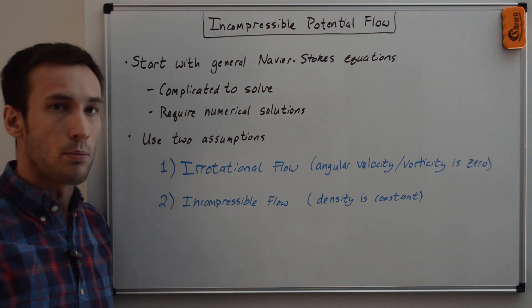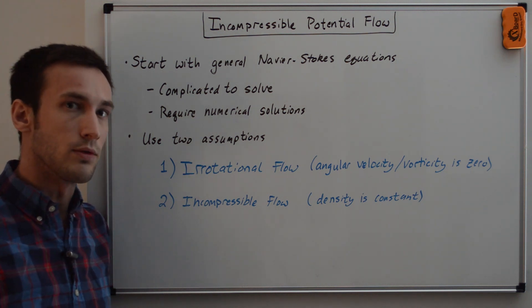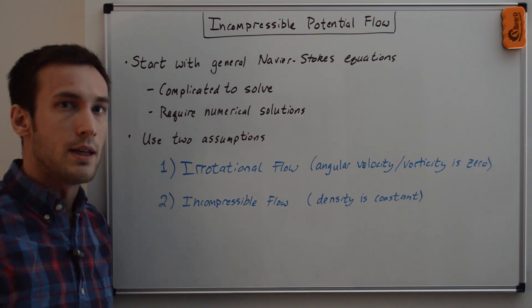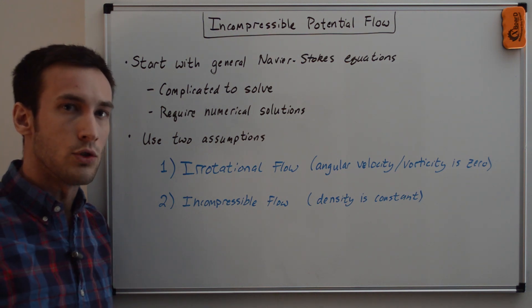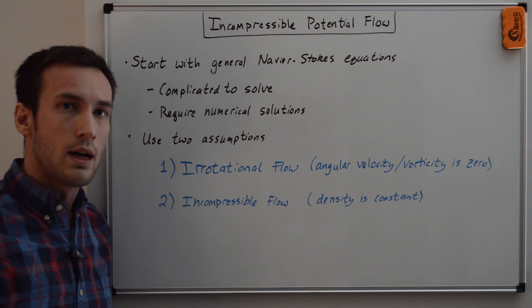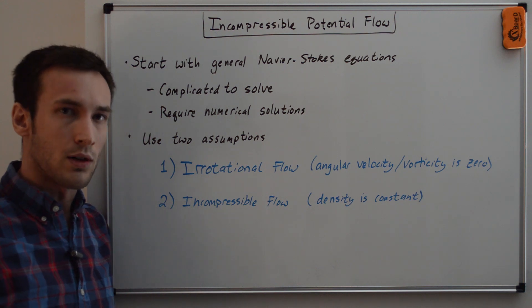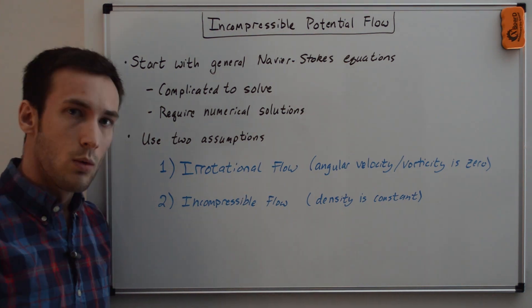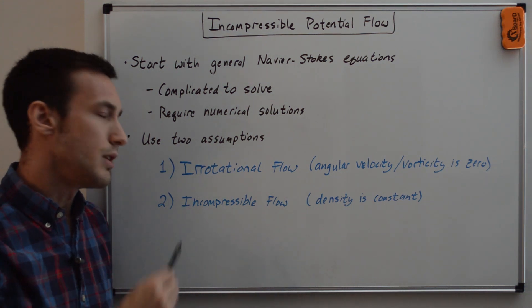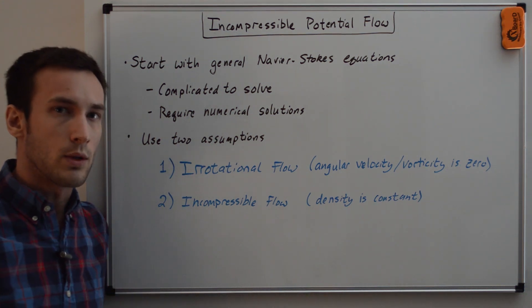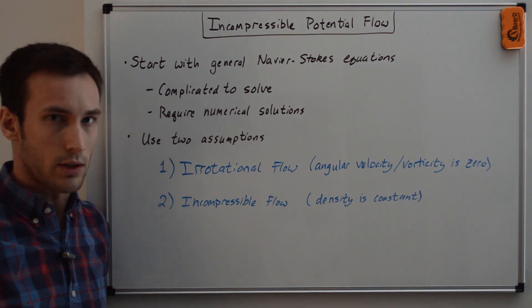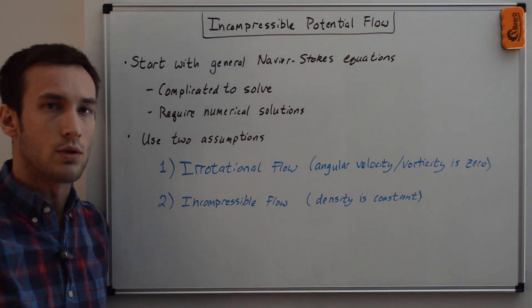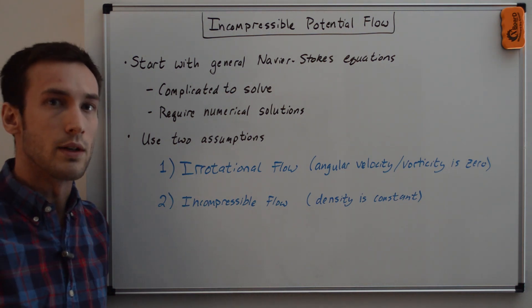The full potential equation is good for both compressible and incompressible flows. In a future video, the compressible potential flow equation will be used for the method of characteristics, which gives you a nozzle or rocket nozzle design. When we then add in the second assumption — the incompressible flow assumption — this gives us the incompressible potential flow equation, a simpler form we can use to solve for the flow around an airfoil.